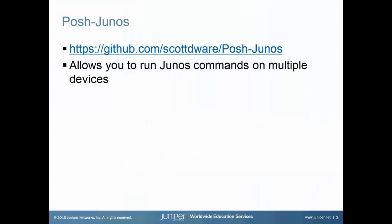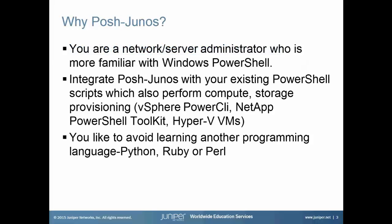PowerJunos is a Windows PowerShell module that is available under the GitHub URL posted here. It allows you to run Junos commands on multiple devices using Windows PowerShell. If you are a network or server administrator who is already familiar with the Windows PowerShell scripting environment, you may find it easier to write automation using the same scripting language.